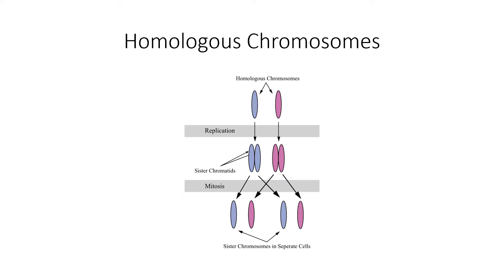Let's go back to the concept of diploid and haploid for just a moment. Diploid cells have 46 total chromosomes, which means there are 23 pairs of chromosomes in our somatic cells — our body cells.